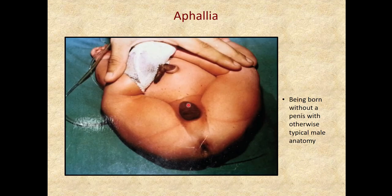Another variation — and I should correct myself: this is actually very uncommon, not common — is aphalia, which is in your textbook. It is the complete absence of a penis developing at all. You can see that if there is no external urethral orifice, that would need to be addressed surgically right away so that person could urinate.